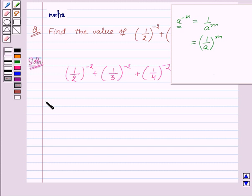So this will be equal to, now here it is 1 upon 2 to the power minus 2. So to get the positive exponent, we will take the reciprocal of the base, that is 2 upon 1 to the power 2. Again we will do the same thing. Reciprocal of 1 upon 3 is 3 upon 1 to the power 2 plus 4 upon 1 to the power 2.